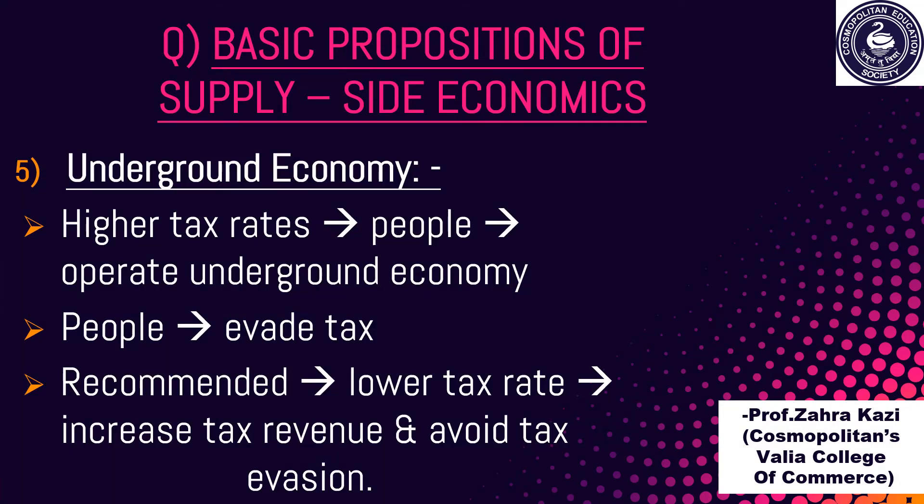The last proposition is the underground economy. According to supply-side economists, higher tax rates will encourage people to operate in the underground or black economy. People will start evading taxes and the income tax department will not be able to trace it. Thus, lower tax rates will not only increase tax revenue but will also discourage people from evading taxes.